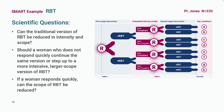Again, the scientific questions map directly to the study design. The first randomization addresses the question of traditional versus reduced RBT. The second randomization — of non-responders — addresses the second question, and the randomization of responders addresses the third question. Like EXTEND, everyone in this design experiences a randomization twice.